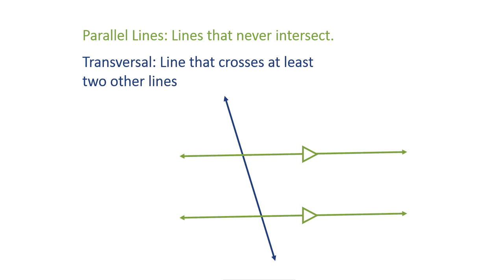Next, we have a transversal. A transversal is a line that crosses at least two other lines. Here, my blue line would be the transversal. And as you can see, when I add in a transversal, I have a lot of angles that are formed, which is where our angle relationships are going to come in.